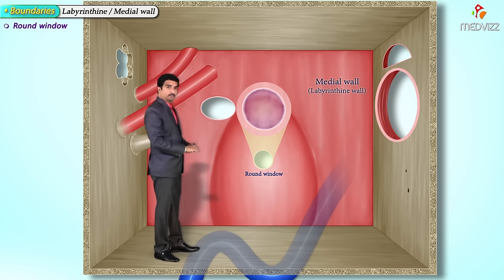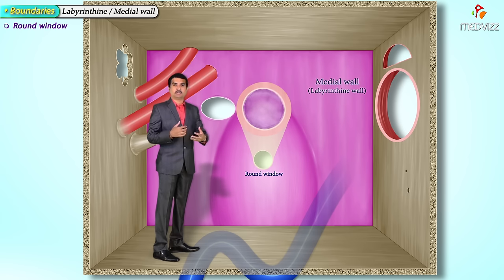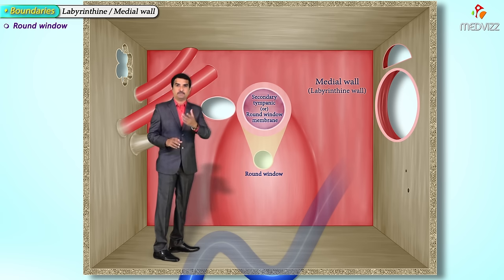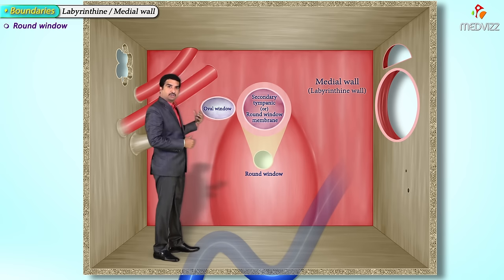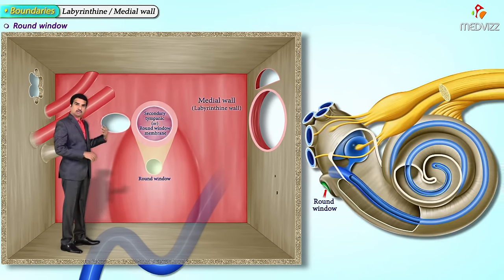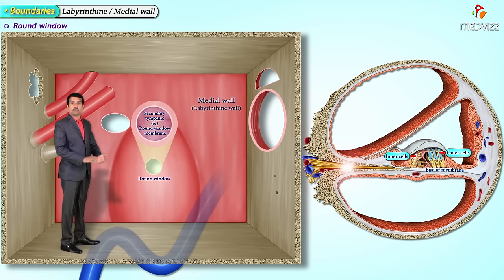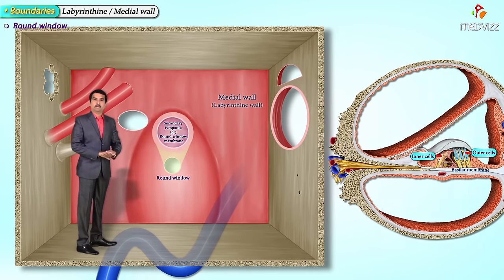The round window is one of the two openings seen on the medial wall of the middle ear, separating the middle ear from the inner ear. It is sealed by a secondary tympanic membrane, also called the round window membrane. This membrane vibrates with opposite-phase vibrations entering the inner ear through the oval window, allowing cochlear fluid to move and stimulating the hair cells of the basilar membrane to produce audition.